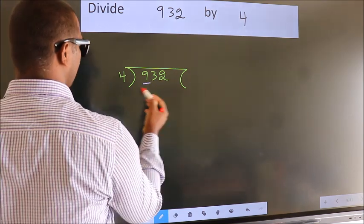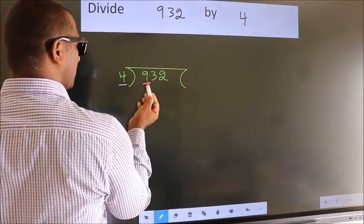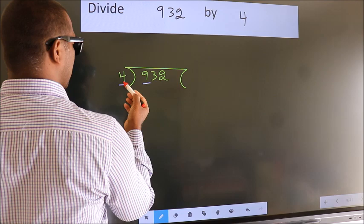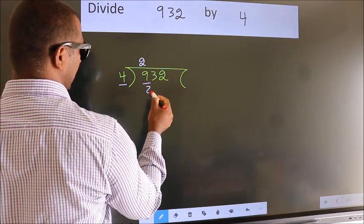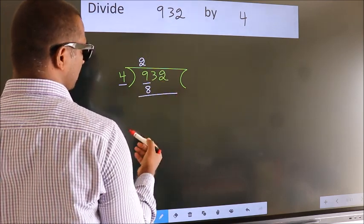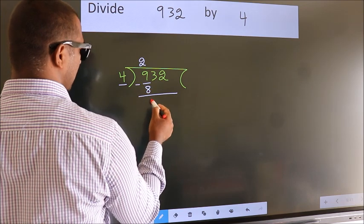Here we have 9, here 4. A number close to 9 in 4 table is 4 twos, 8. Now we should subtract. We get 1.